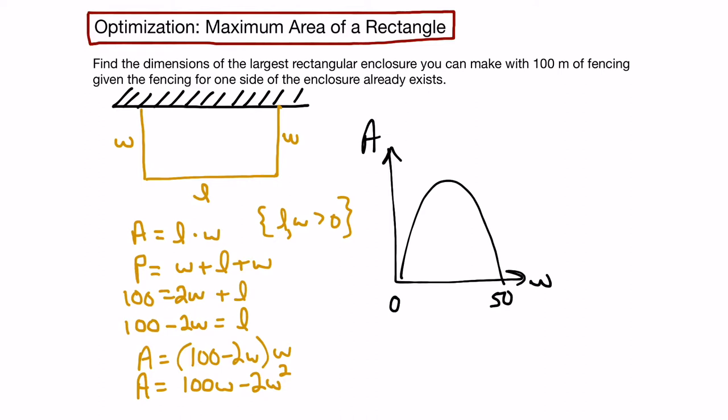We know that because if width was 0, the length would be 100, and that would mean this fence line would go right along the existing fence line, so our area would be 0. Also at 50, if we plug that in, we would see that length would be 0, so area would also be 0. What we see is that we have a smooth continuous curve over that interval, and there exists up at the top a critical point where the slope of the tangent line would be 0.